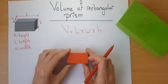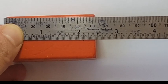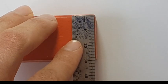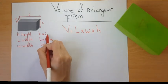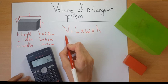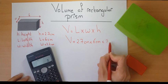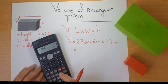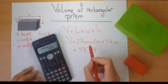Let's measure the dimensions of this rectangular prism using the calculator. The volume is 2.7 centimeters times 6 centimeters times 2.7 centimeters. Using the calculator: 2.7 times 6 times 2.7 gives us 43.74 centimeters cubed.